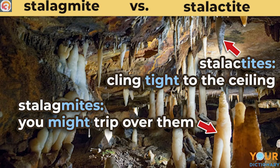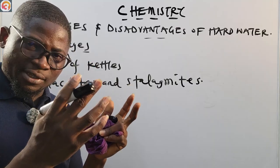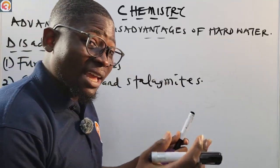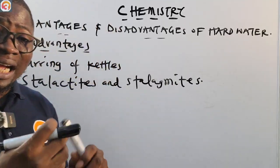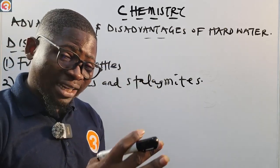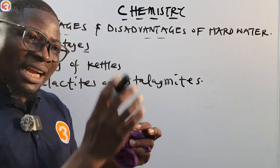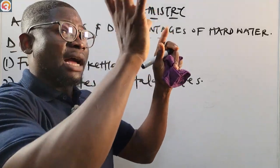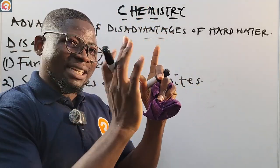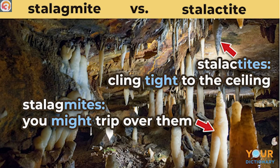This occurs when rain dissolves limestone. As it dissolves the limestone, it brings deposits back and attaches them to caves. In rocky areas with limestone deposits, rainfall dissolves those limestone deposits and they hang from the top of the cave — those are called stalactites. If they grow from the ground upward, those are called stalagmites.